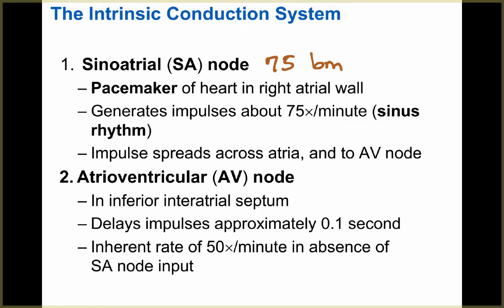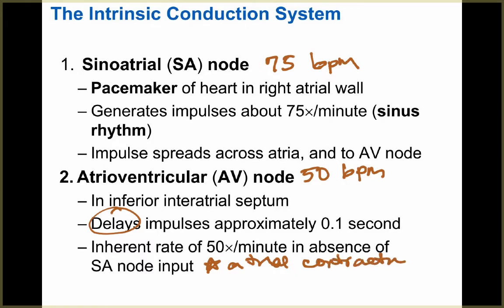The atrioventricular node, or AV node, is in the inferior intraatrial septum. It delays the impulse approximately 0.1 seconds. This AV node operates at about 50 beats per minute — that's its inherent rate in the absence of the SA node. This delay ensures that atrial contraction happens before ventricular contraction.